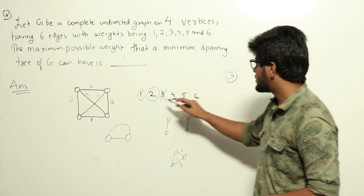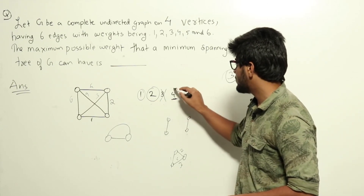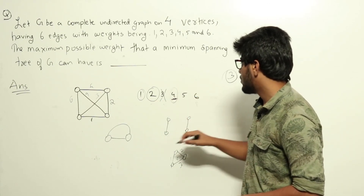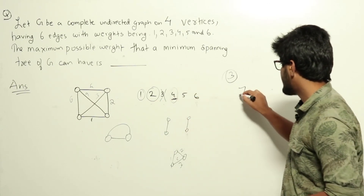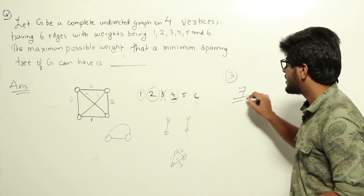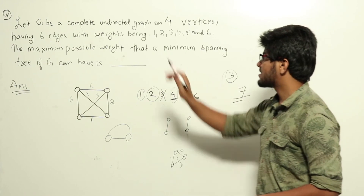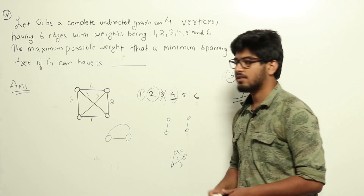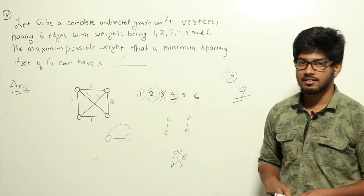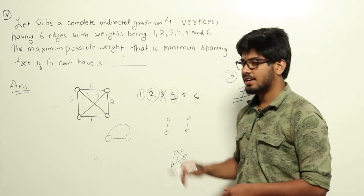Therefore, if we choose edges 1, 2, and 4, the total weight is 1 + 2 + 4 = 7. This is the maximum possible weight of the minimum spanning tree, so the answer is 7.